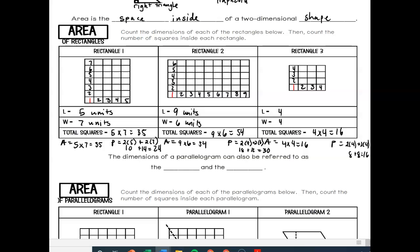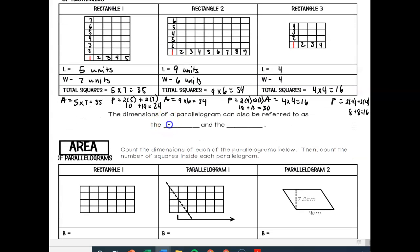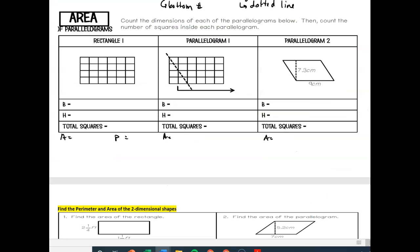The dimensions of a parallelogram, instead of using length and width, we can refer to those as base and height. Height is often going to be represented by a dotted line. Base, you can think of usually as the bottom number or the number that you could rest the shape on. So a rectangle is technically a parallelogram. In rectangle number one, we can find its base and its height, similar to length and width. We have a base here of six units and a height of four units. Notice no dotted line here - you don't really need it because we have a right angle.